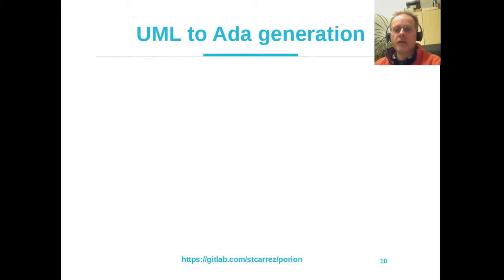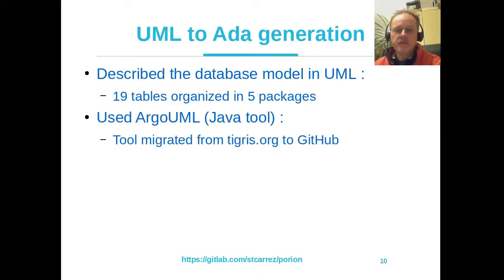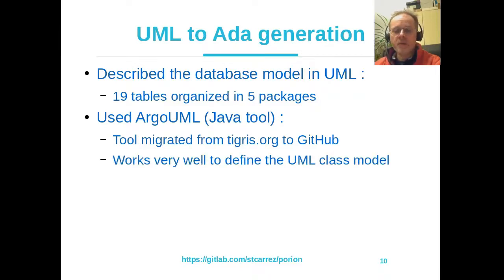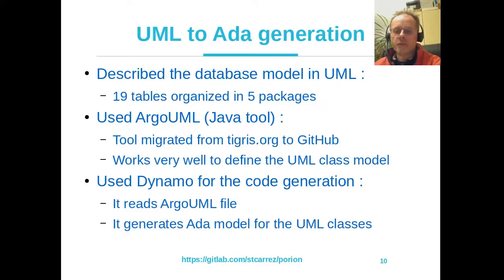Let's look at UML to ADA code generation. I described the database model in UML — 19 tables organized in 5 packages. For the UML I used ArgoUML, which is an old Java tool migrated from Tigris.org to GitHub; it's still maintained and works well to define the UML class model. Dynamo reads the ArgoUML file and generates the ADA packages from the UML classes.